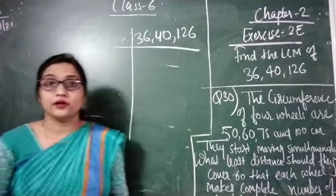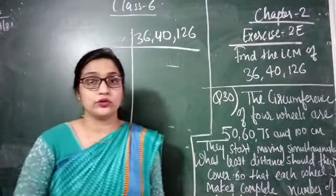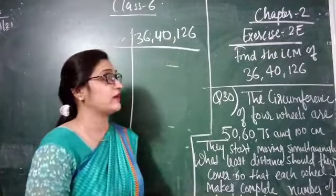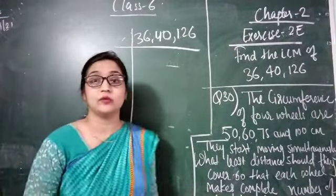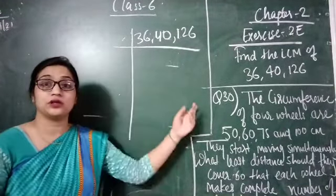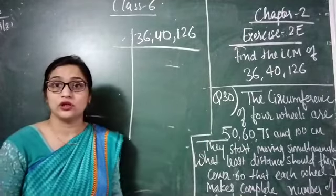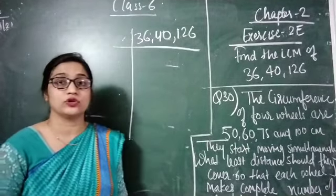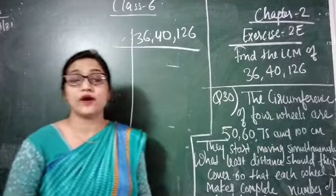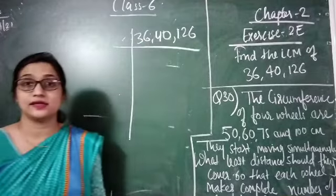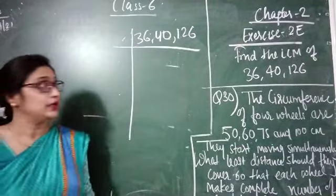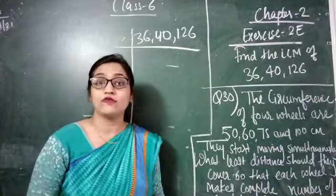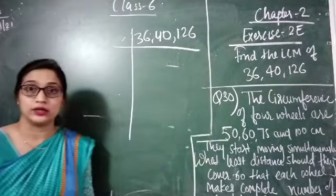Dear students, today we are going to solve one of the questions of exercise 2E — finding the LCM. Question number 30 is left. So first we are going to solve how to find the LCM of any number. Here 3 numbers are given: 36, 40 and 126.